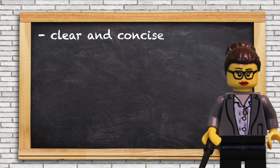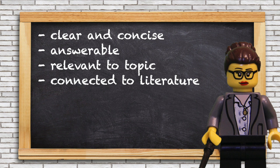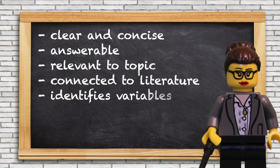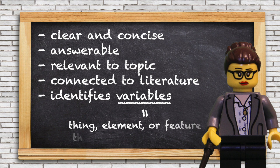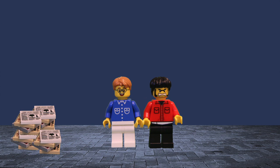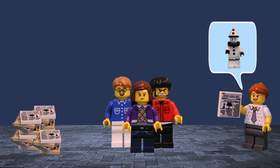Good research questions and hypotheses are clear and concise, they're answerable, they're relevant to our topic, and feed back into existing literature. They also identify the key things we care about — our variables — and they indicate what kinds of relationships we're curious about between those variables. So what exactly is a variable? At its simplest, it's a thing, element, or feature that can vary or change. In the news media example, our variables would be amount of news coverage for a given issue, intensity with which the general public cares about a given issue, and we might add a third variable of which issue is being covered.